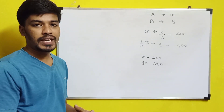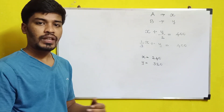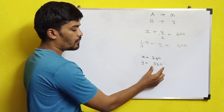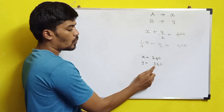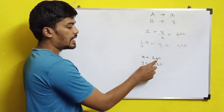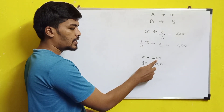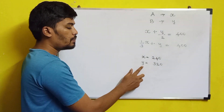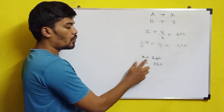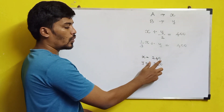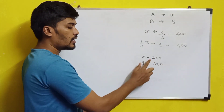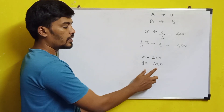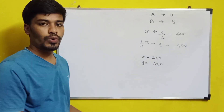So B's amount is 320. Let's verify: half of B's amount is 160, and adding that to A's total gives 400. One-third of B is approximately 80, and adding that to A also gives 400. So B has 320.